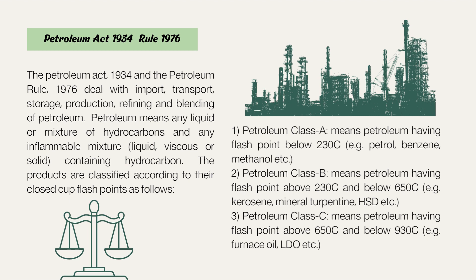First is Petroleum Class A, which means petroleum having a flashpoint below 23°C. Examples are petrol, benzene, methanol, and many more. Second is Petroleum Class B, which means petroleum having a flashpoint above 23°C and below 65°C. Examples are kerosene, mineral turpentine, HSD, and many more. Third is Petroleum Class C, which means petroleum having a flashpoint above 65°C and below 93°C. Examples are furnace oil, LDO, and many more.